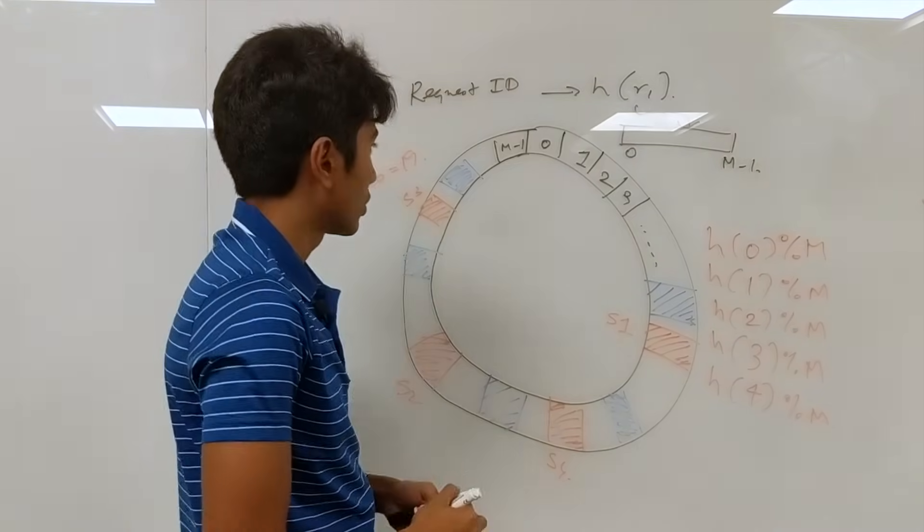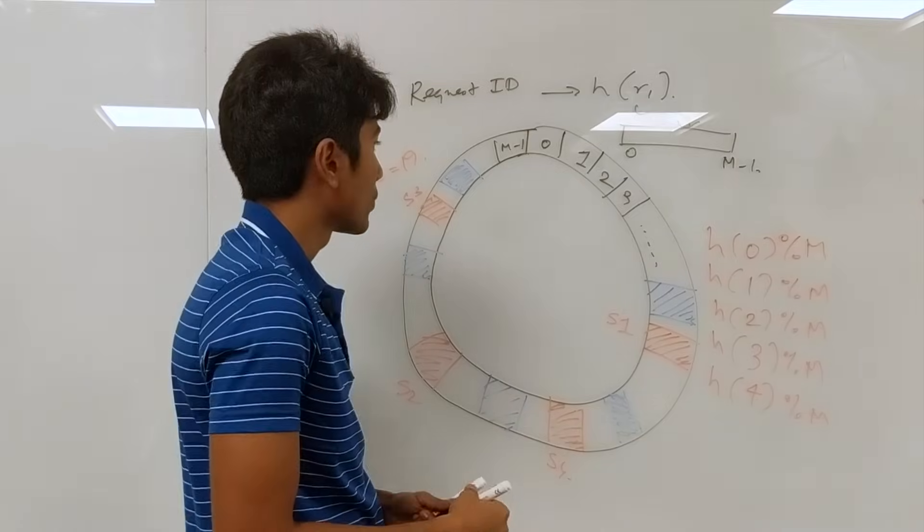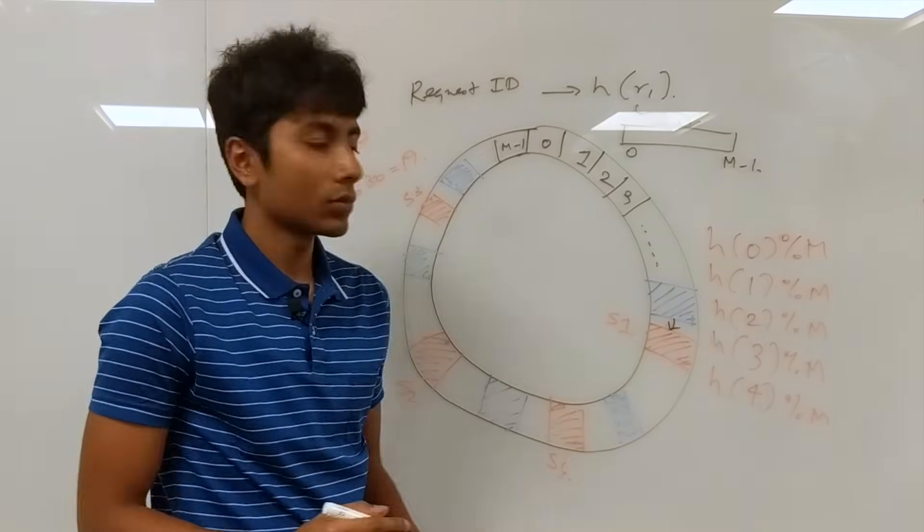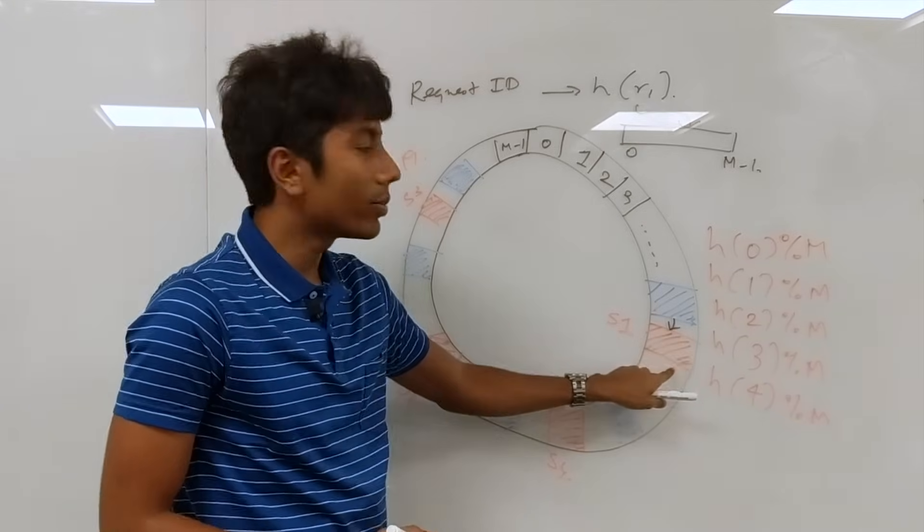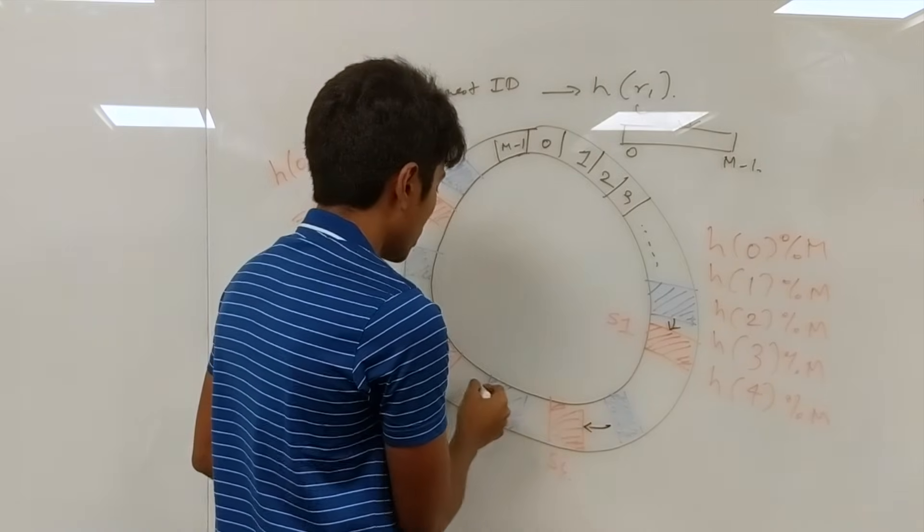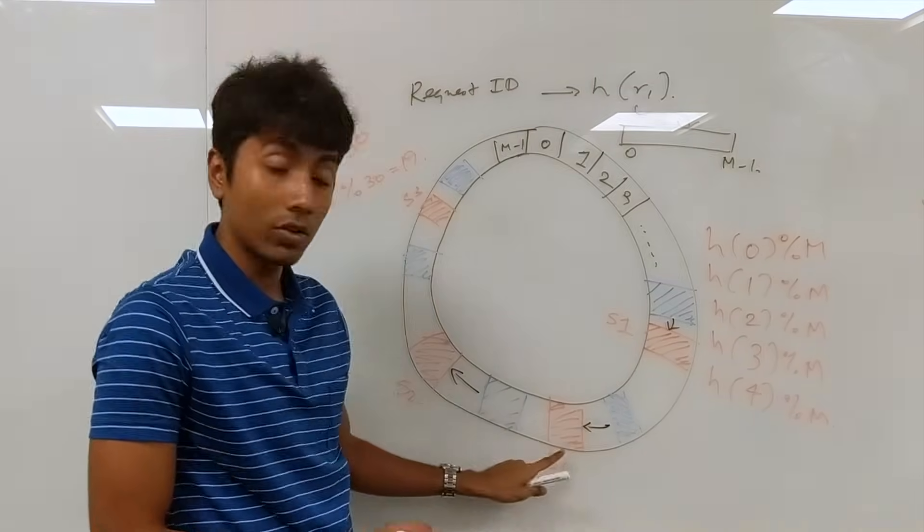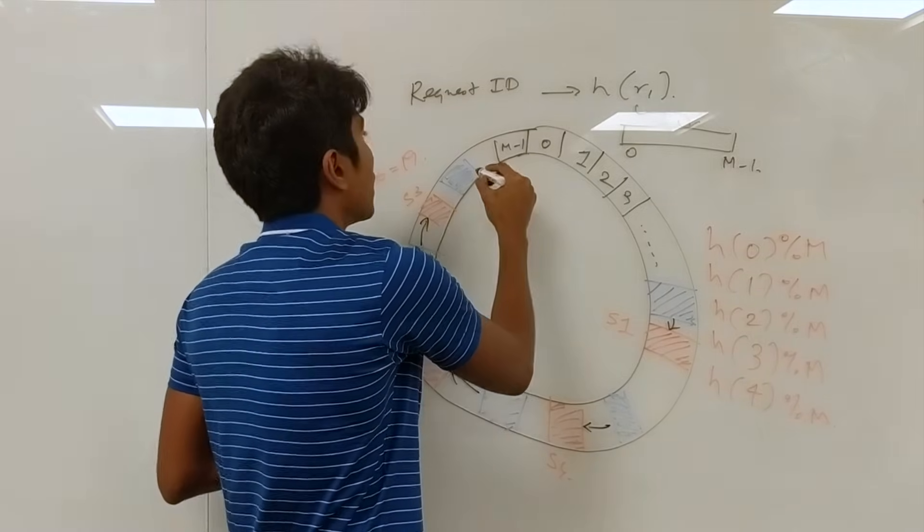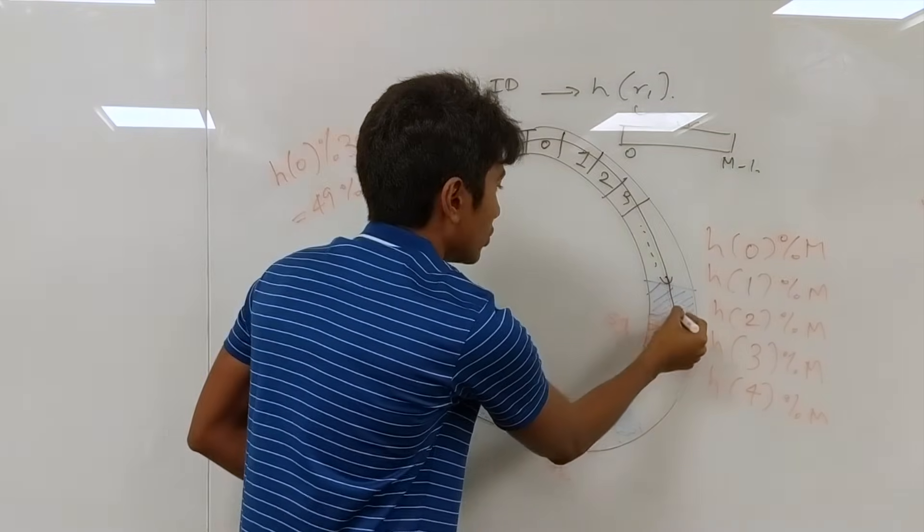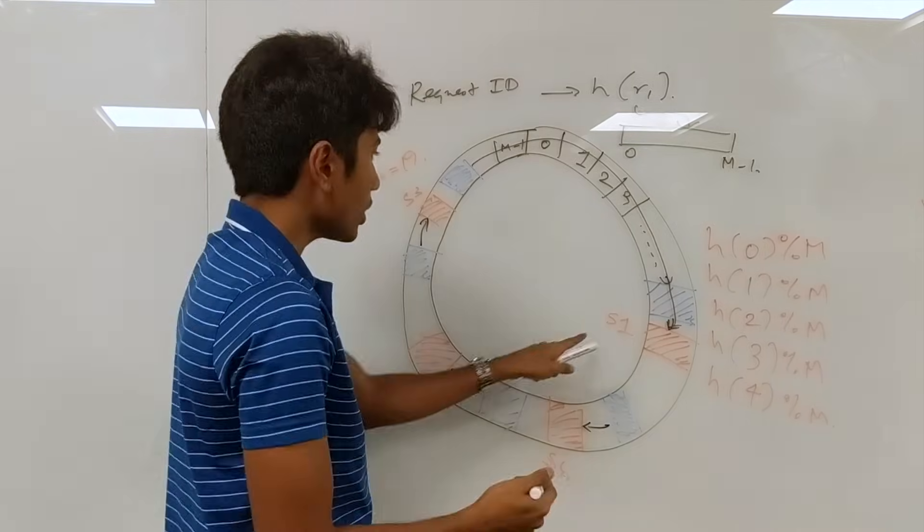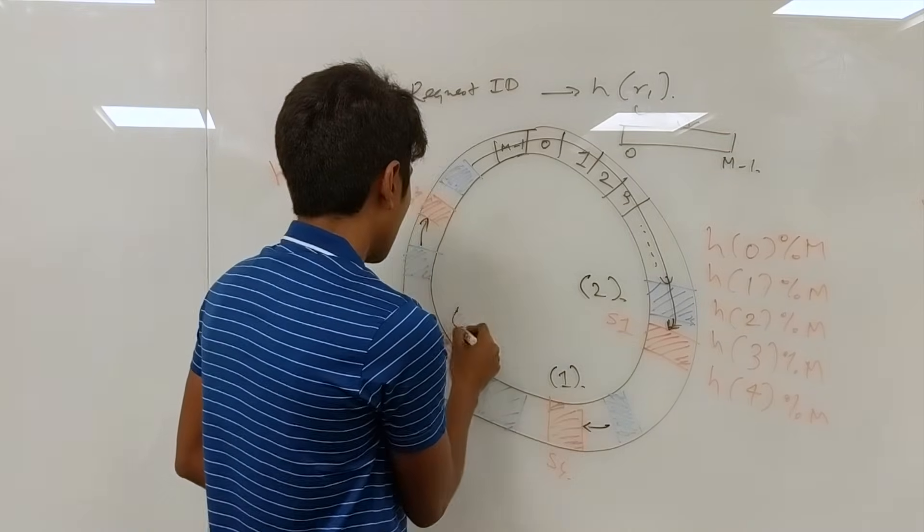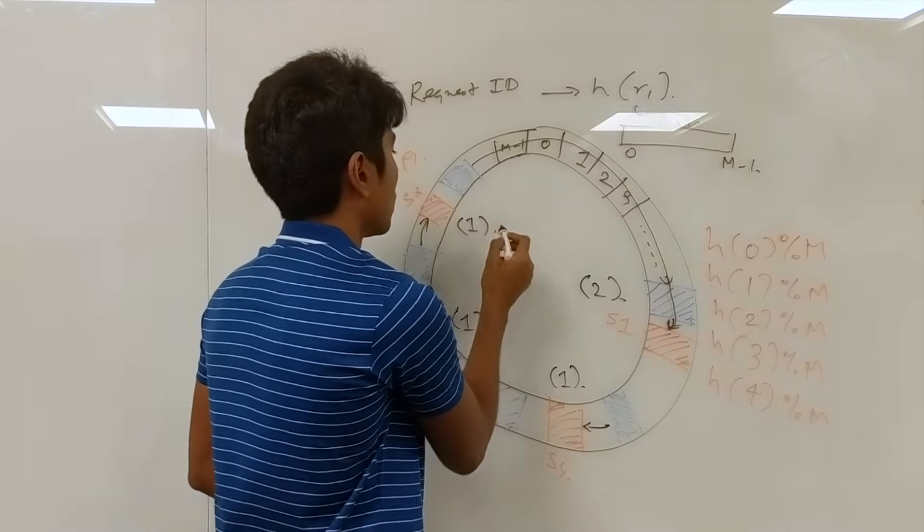Now whenever a request comes in to this ring that we have, what we do is we go clockwise and find the nearest server. This server is going to be serving this request. Simple algorithm. This one is going to be served by s2, this one by s4, this by s2, this by s3, this by s1. So s1 has load of two requests, this has load of one, load of one, and a load of one.